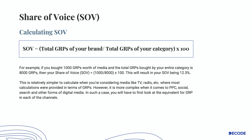So if you want to calculate share of voice, you don't look at the expenditure — you look at the total GRPs of your brand divided by the total GRPs of your category, and the result is then multiplied by 100. For example, if you bought 1,000 GRPs worth of media and the total GRPs bought by your entire category is 8,000 GRPs, then your share of voice is 1,000 divided by 8,000 multiplied by 100, which equals 12.5%. This is relatively simpler to calculate for media like TV and radio, where most calculations are provided in terms of GRPs.